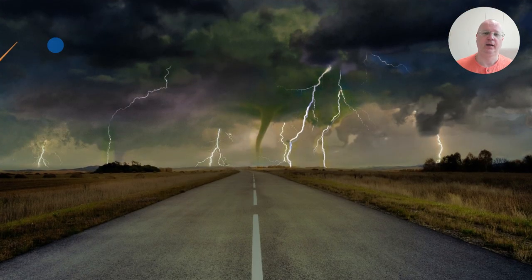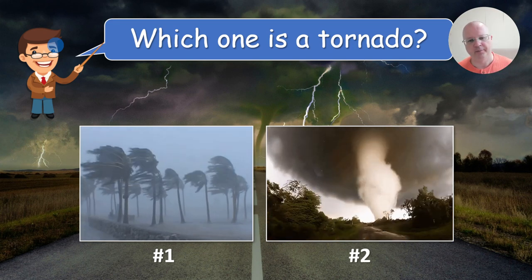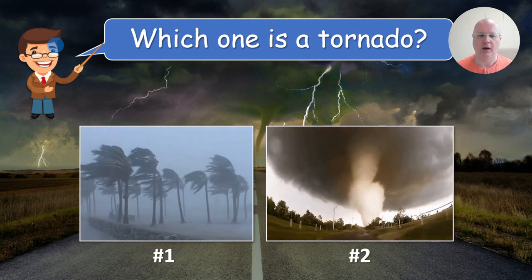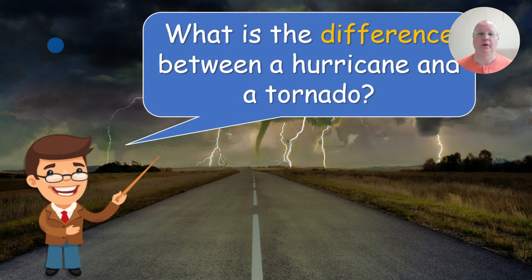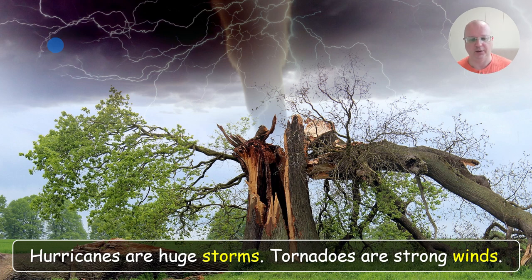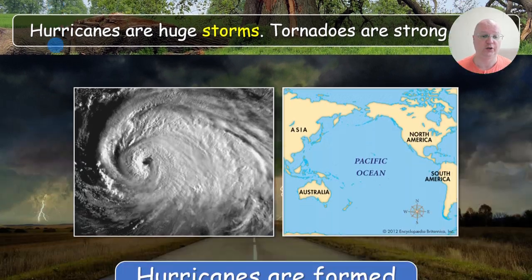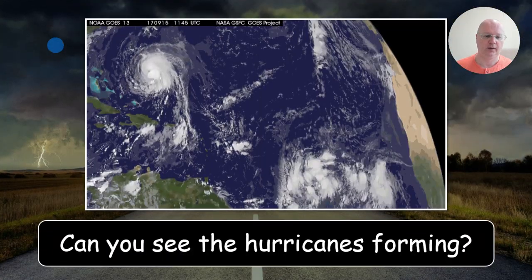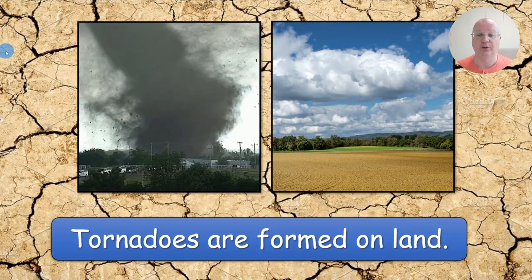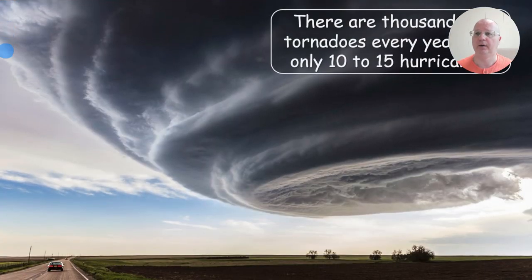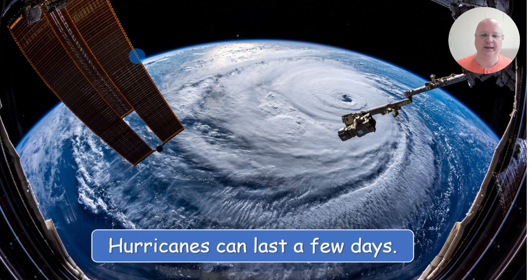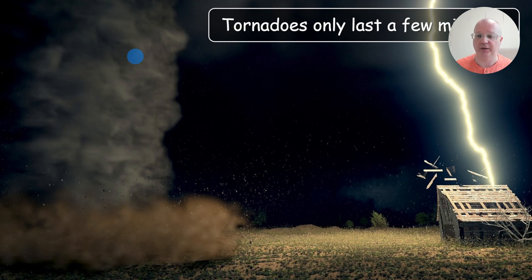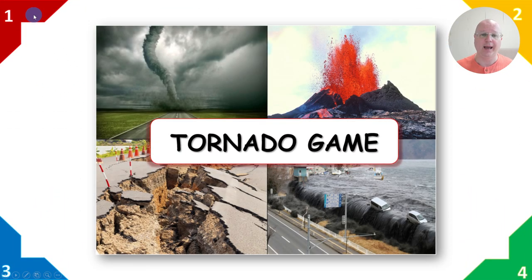Pop quiz: which one is a tornado? Students should pick the correct one — number two is a tornado. Hurricanes are huge storms; tornadoes are strong winds. Hurricanes are formed in the ocean — can you see the hurricanes forming? Tornadoes are formed on land. There are thousands of tornadoes every year, but only 10 to 15 hurricanes. Hurricanes can last a few days, and tornadoes only last a few minutes.